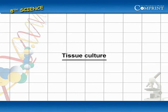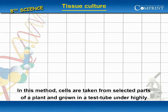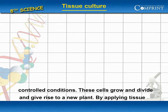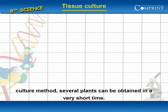Tissue Culture: In this method, cells are taken from selected parts of a plant and grown in a test tube under highly controlled conditions. These cells grow and divide and give rise to a new plant. By applying the tissue culture method, several plants can be obtained in a very short time.